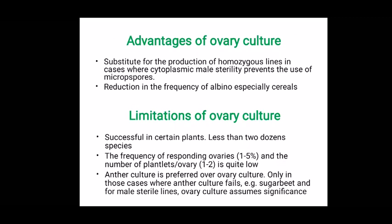Ovary culture is an ideal substitute for the production of homozygous lines — that is, haploids and doubled haploids — in cases where anther culture cannot be used. For example, in CMS (cytoplasmic male sterile) lines, microspores will not be produced, so we depend on ovary culture to produce haploids. Additionally, a reduction in the frequency of albino plantlets can be achieved through ovary culture when more albinos are encountered through anther culture.